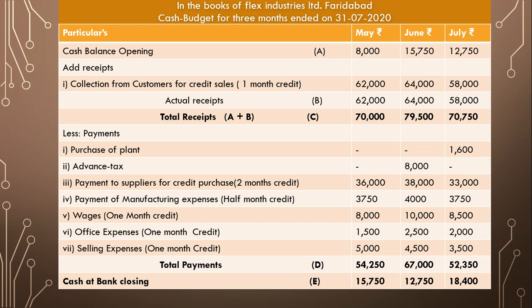So payment of manufacturing expenses: 3,750 for May, 4,000 for June, and 3,750 for July. The lag in payment of all other expenses — office expenses and selling expenses — is one month. So expenses incurred in March are paid in April, April expenses in May, June expenses in July, and so on.